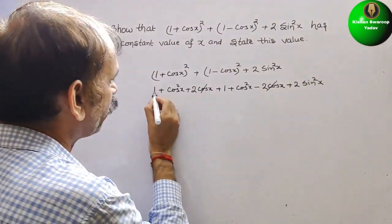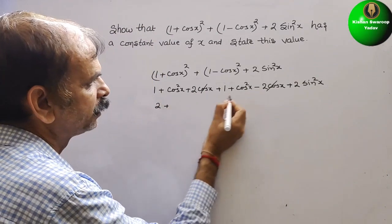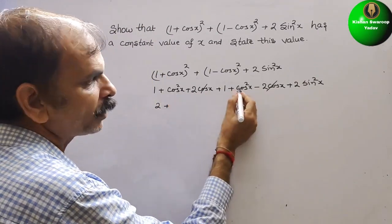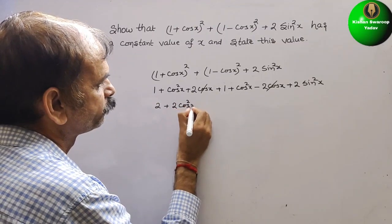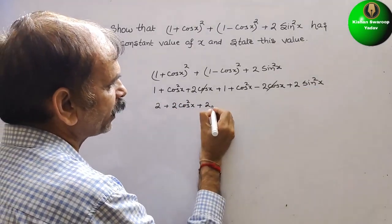So now 1 + 1 is 2, plus cos²x + cos²x is 2cos²x plus 2sin²x.